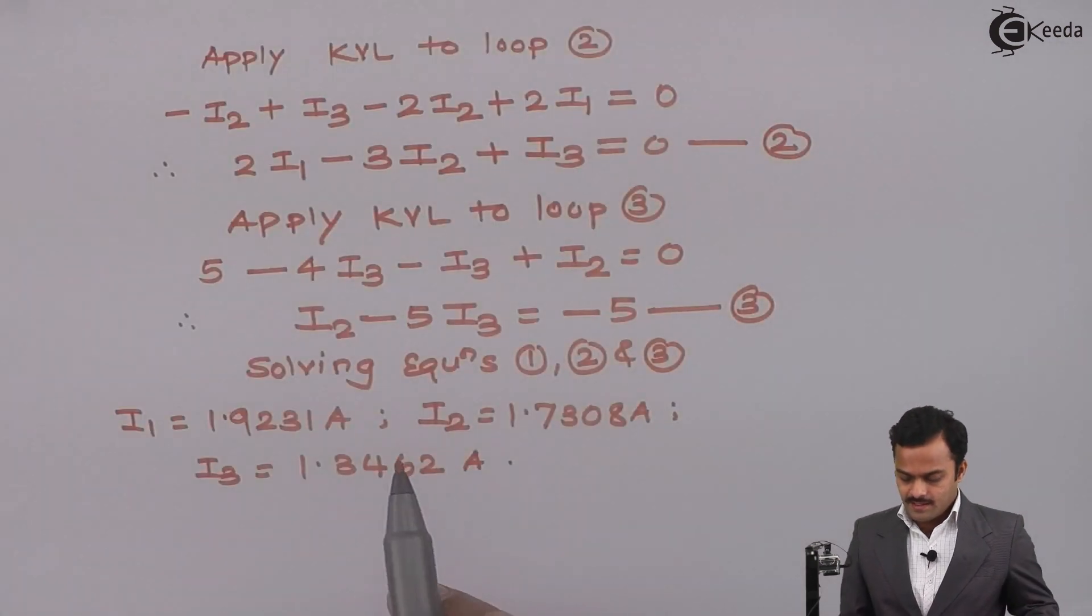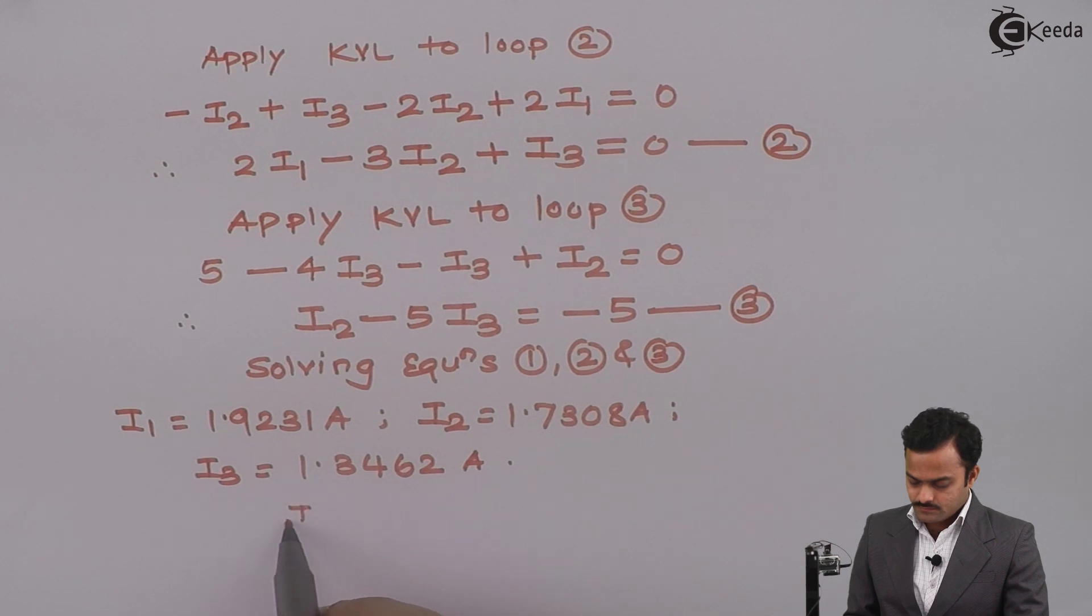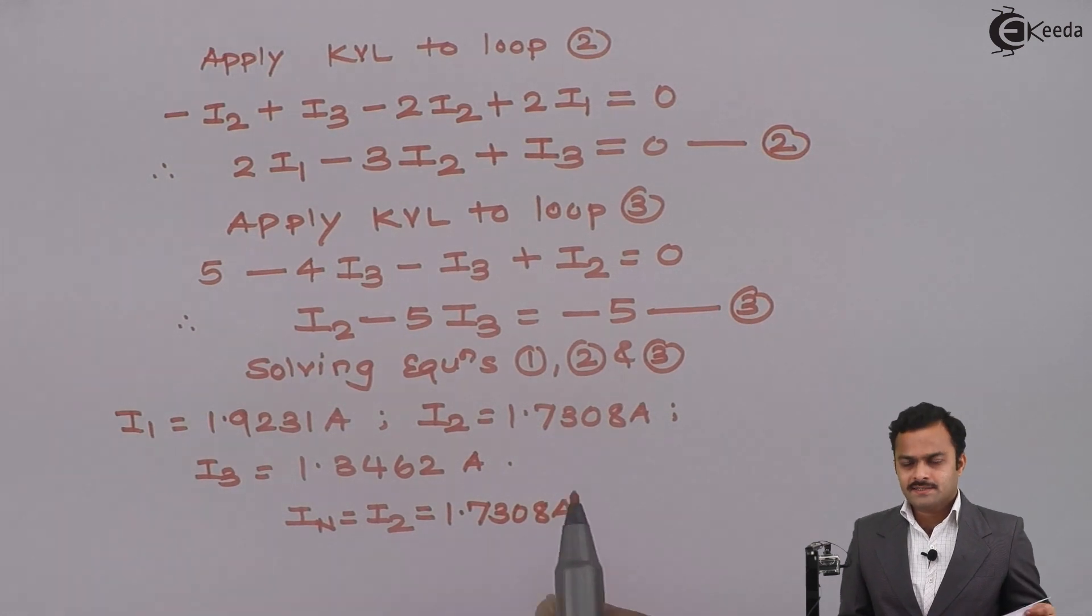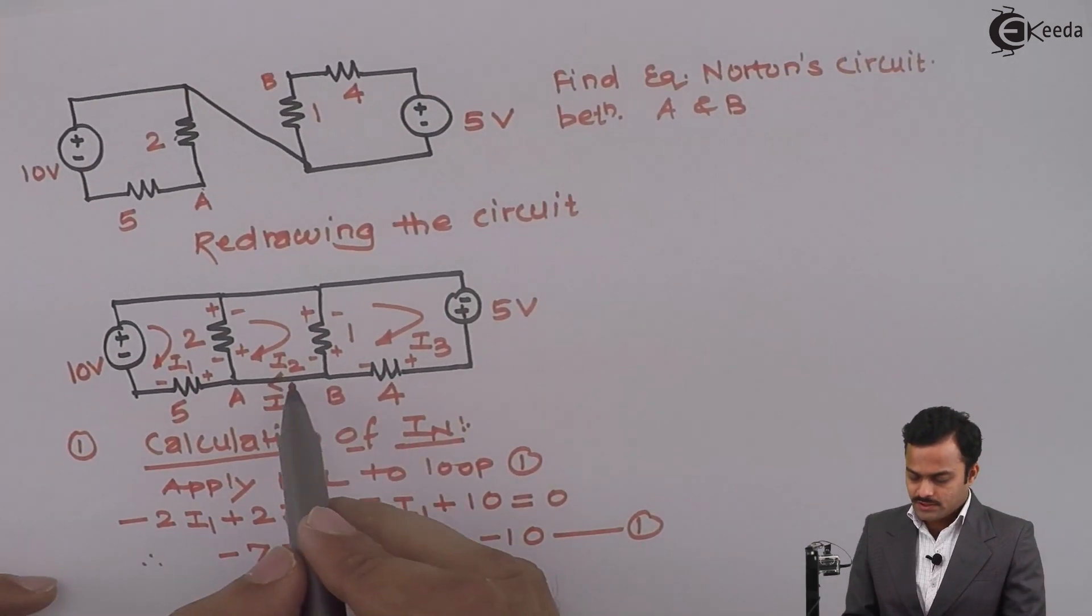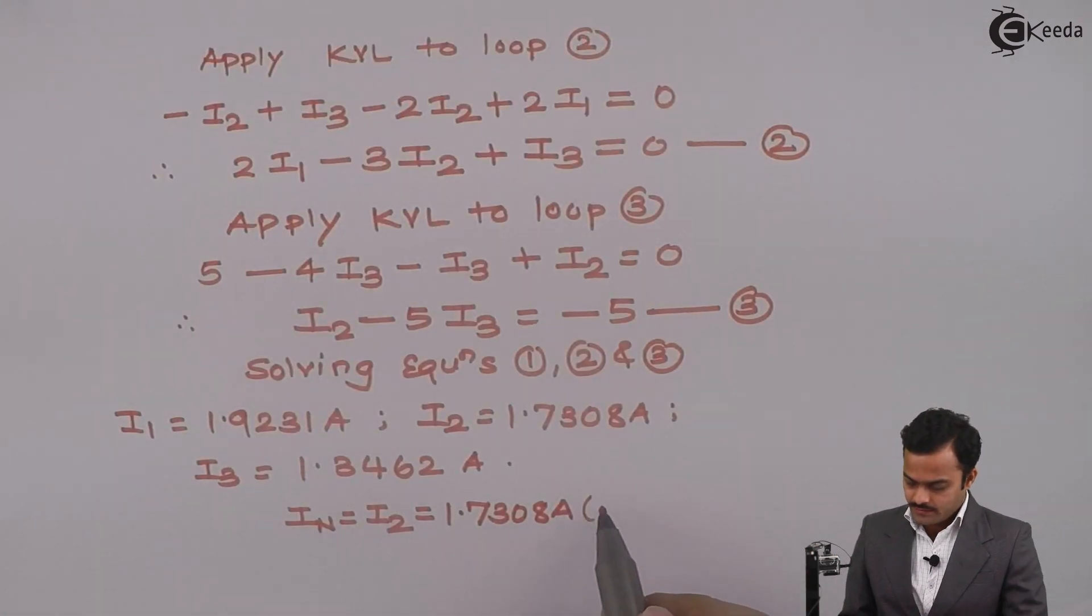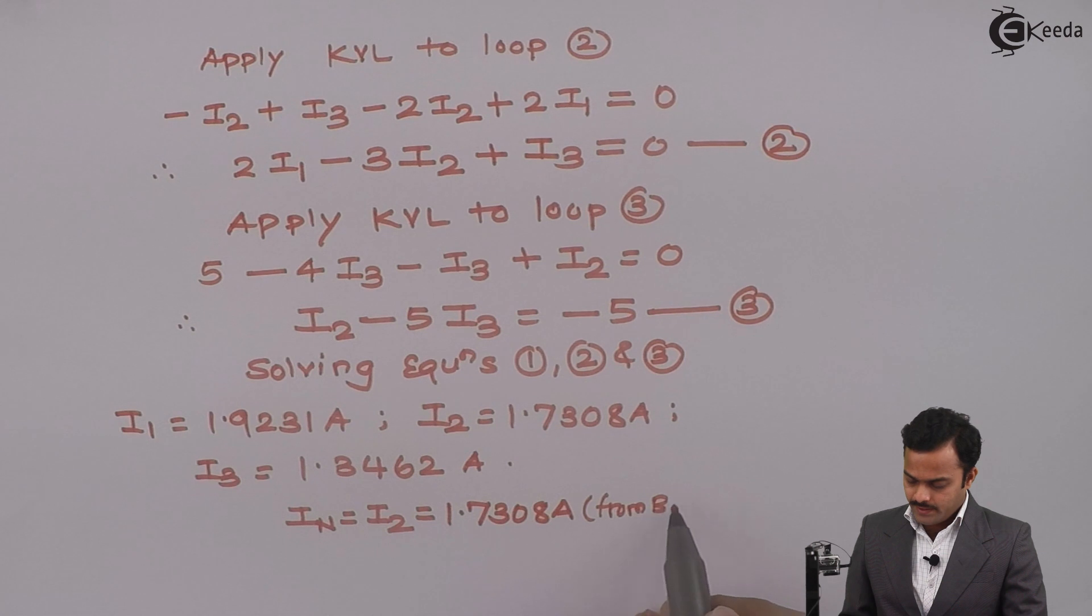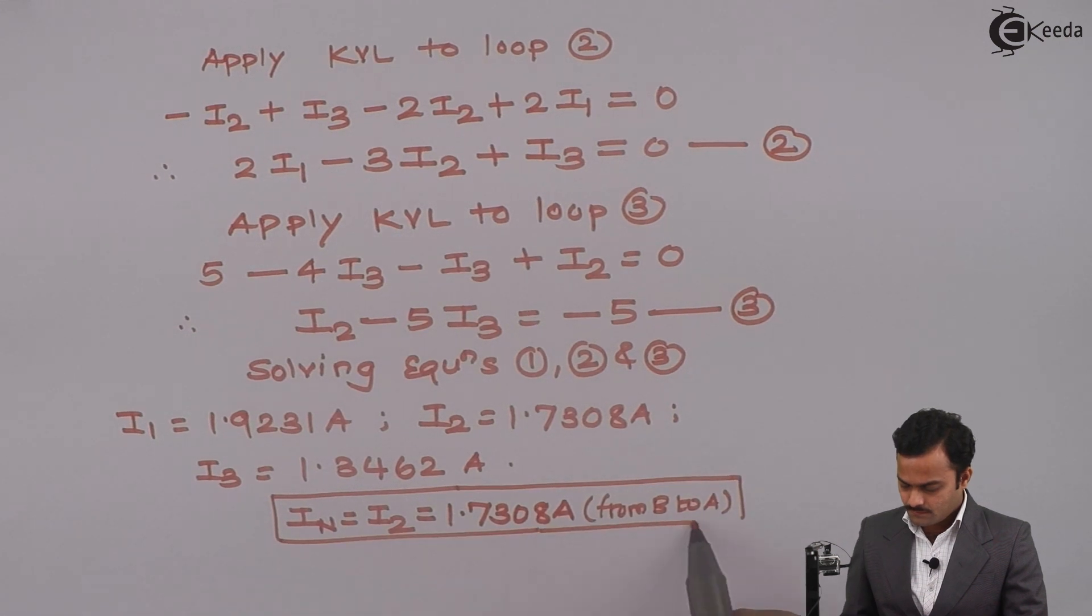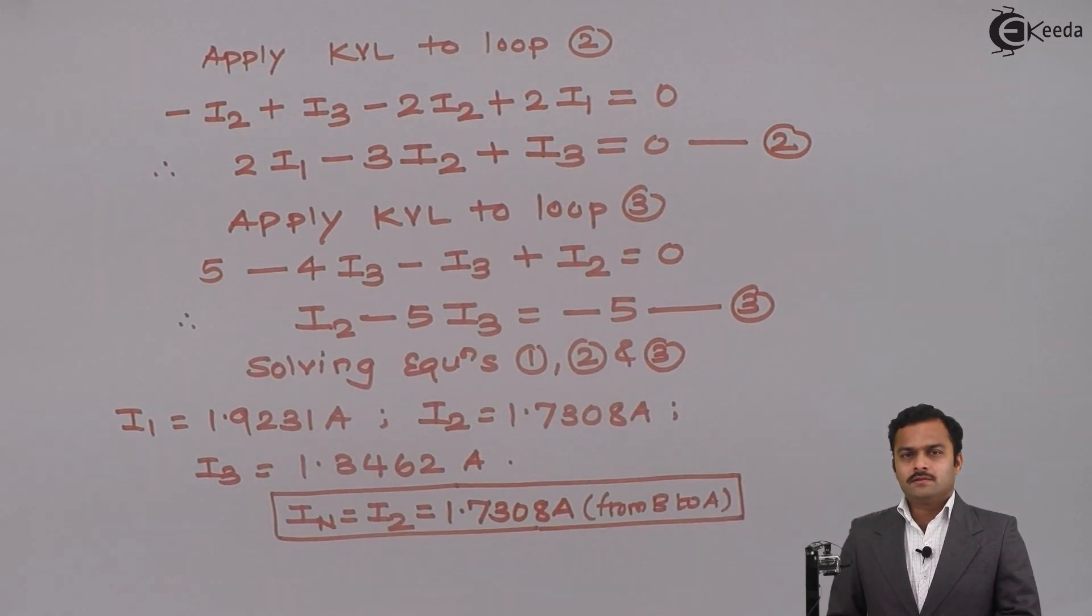So I can say IN is nothing but I2, which equals 1.7308 amperes. I am considering the positive value. The positive value is from B to A, so here I will write from B to A. Step number one is over.